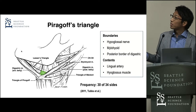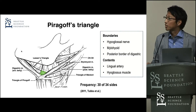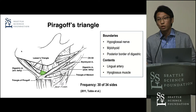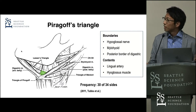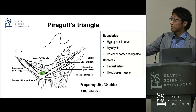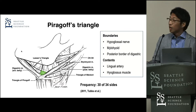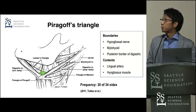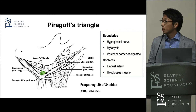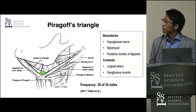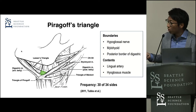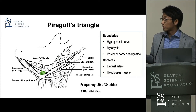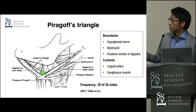The next is Pirogov's triangle. Pirogov was a Russian surgeon. This is also a nice landmark to look for the lingual artery. This is simply the posterior part of Lesse's triangle. This green highlighted area is Pirogov's triangle. The difference from Lesse's is that the anterior border is the mylohyoid. The frequency of this triangle was 30 of 34 sites according to the same literature.